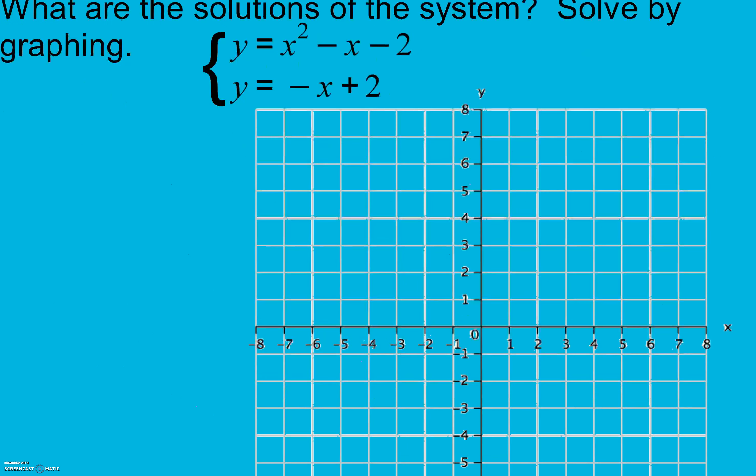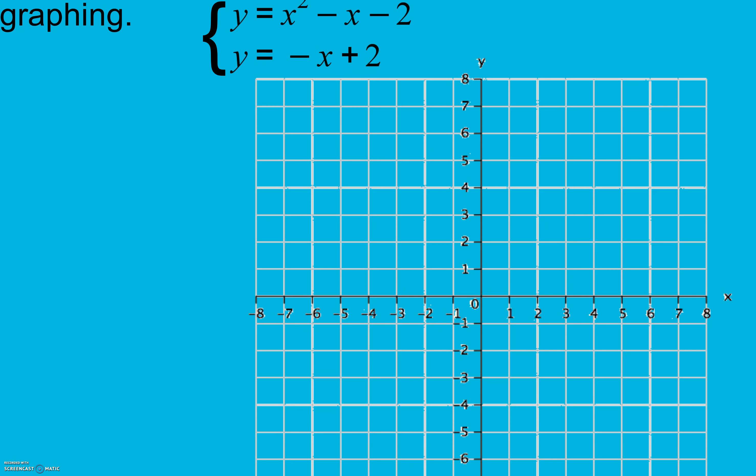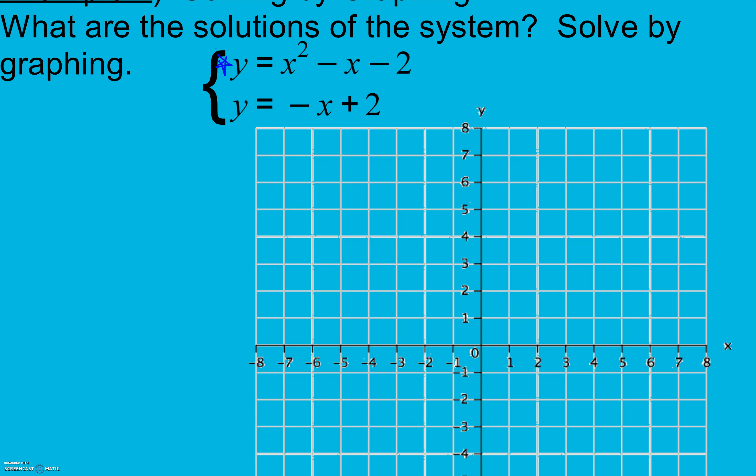In example one here we're going to solve by graphing. So we have a system of equations here. I'm going to graph my first equation which is quadratic so I know it's going to end up being a parabola. And because I have this x term here I have to start off by finding my axis of symmetry or my middle. In order to do that it's negative b over 2a. So negative my b value is minus 1 over 2 times a is 1. And I get 1 over 2. So x equals a half at my axis of symmetry. That also means half is my middle point and I'm going to pick two numbers on each side of that.